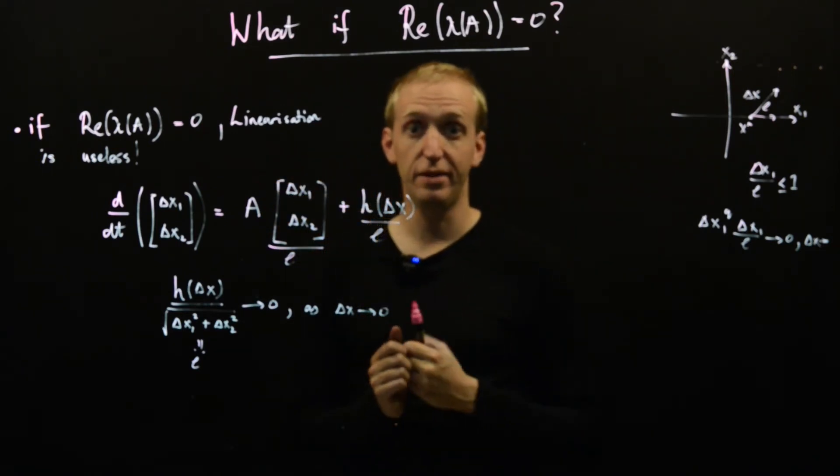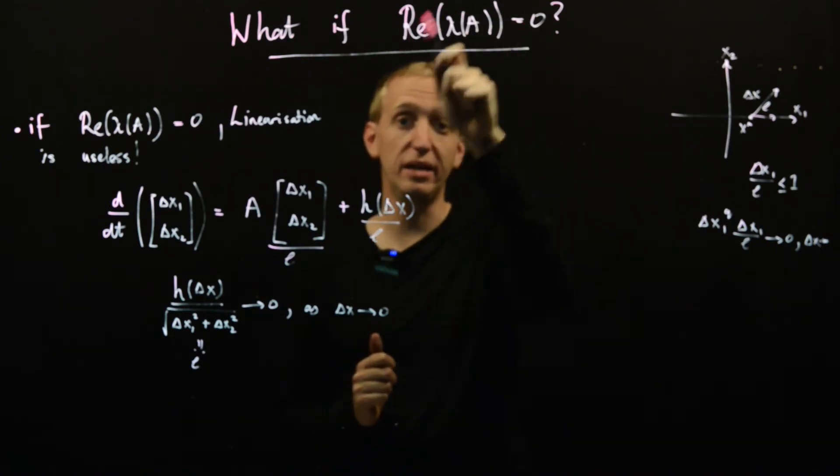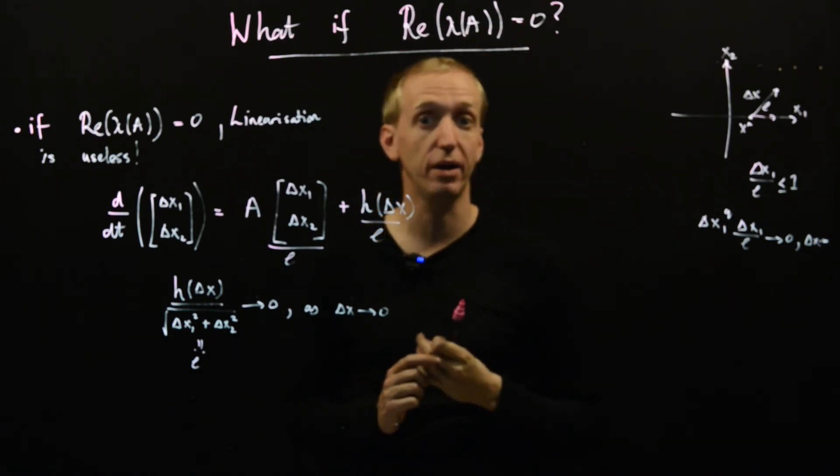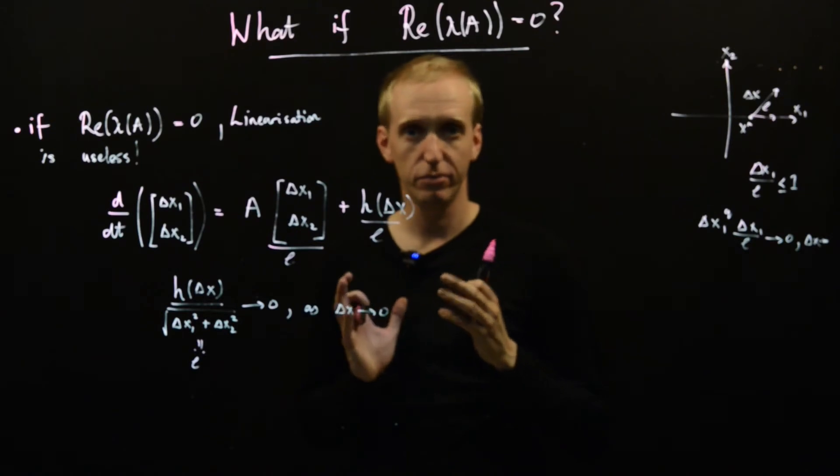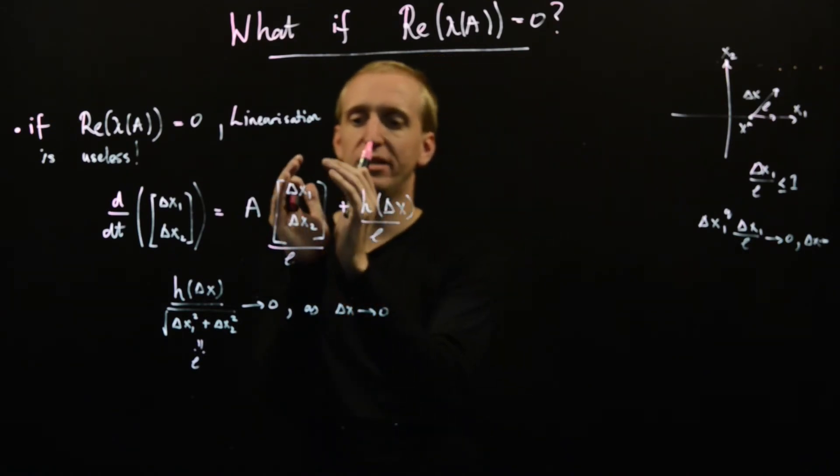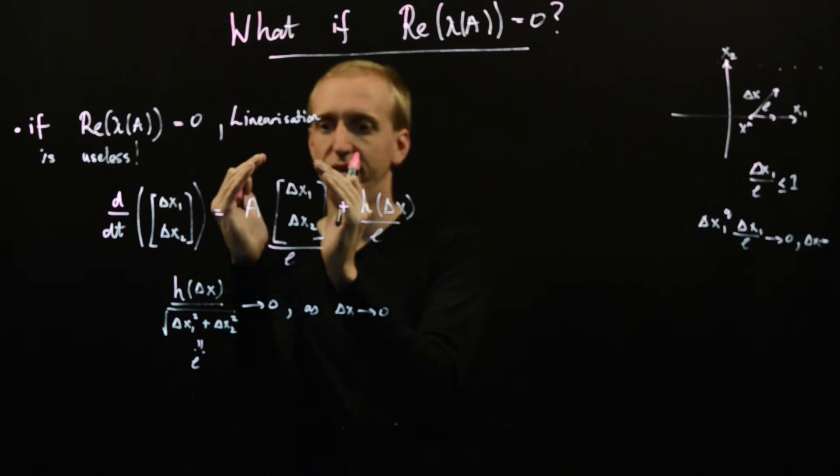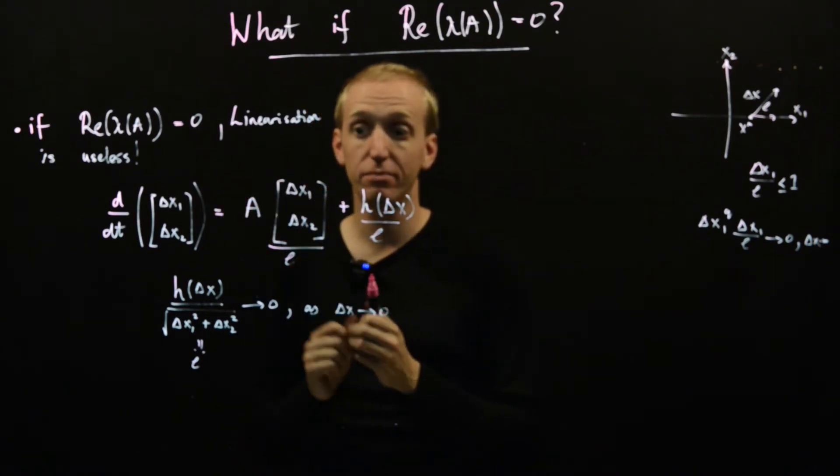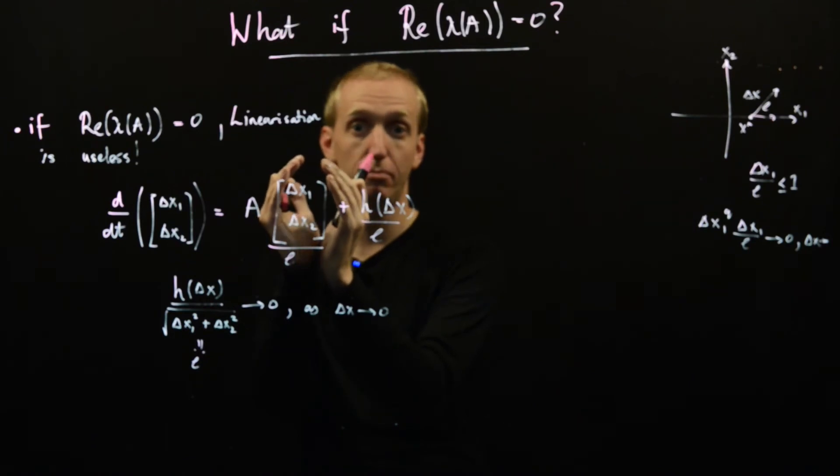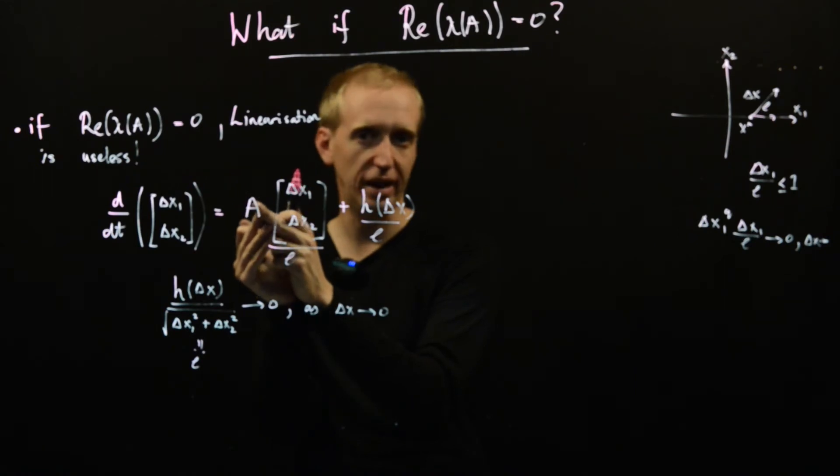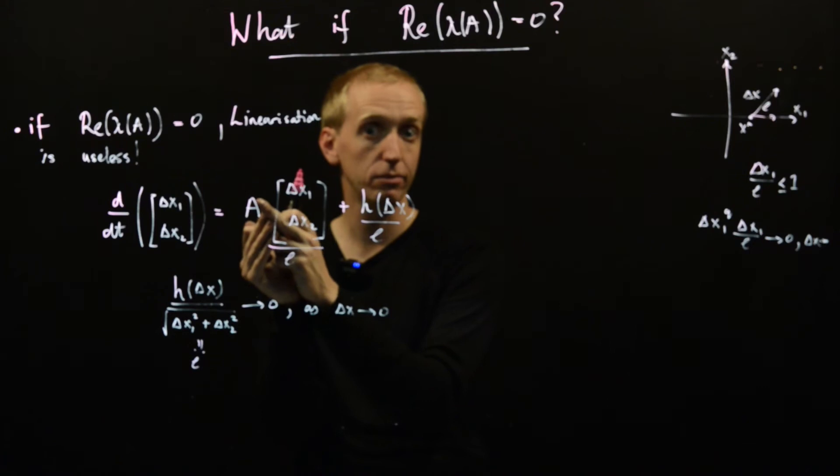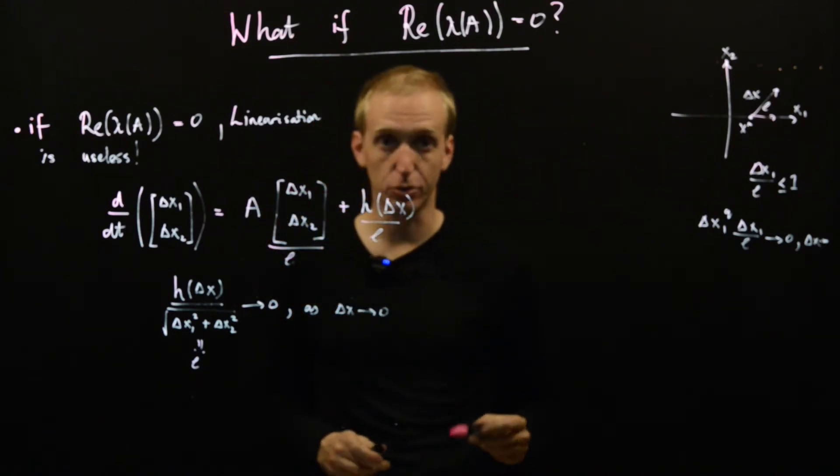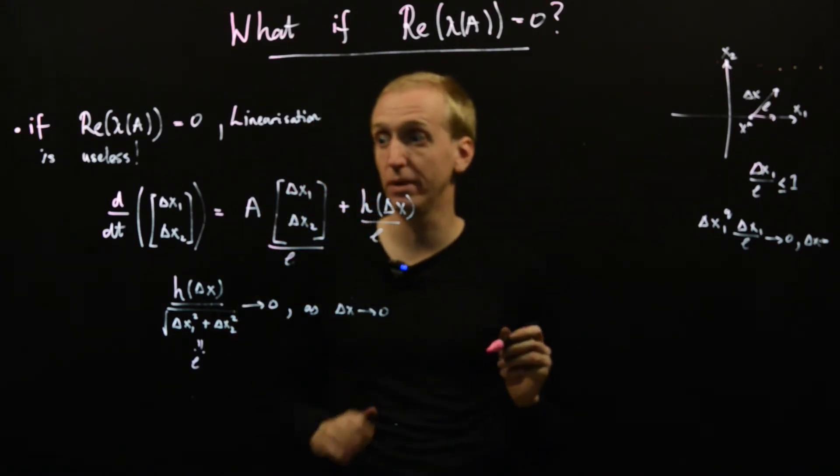But the problem you have, and the reason why you need to avoid eigenvalues with zero real part, is that just because this dominates this, doesn't mean that this will dominate this. And in particular, you have problems if this is pointing in the direction of an eigenvector of A that has this eigenvalue of zero or eigenvalue of zero real part. So just to give you kind of a simple example of that,